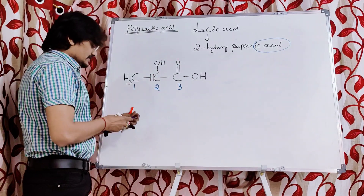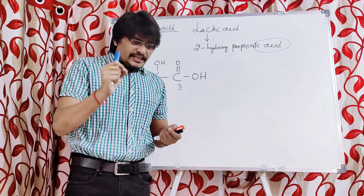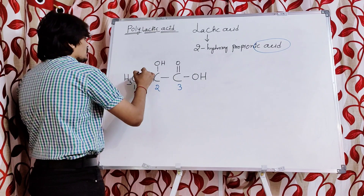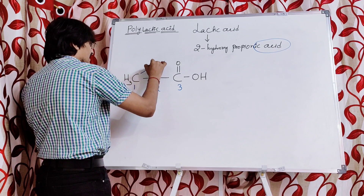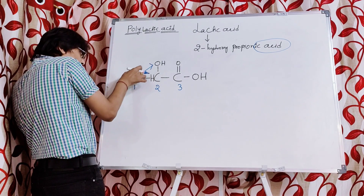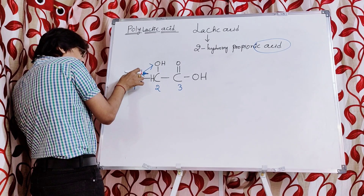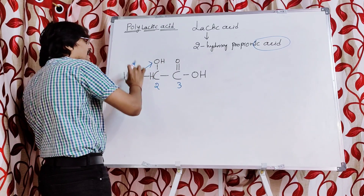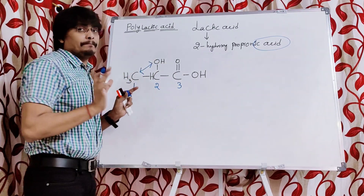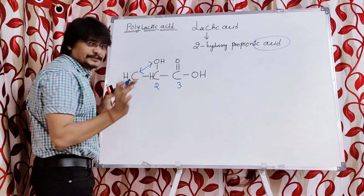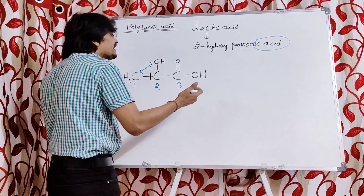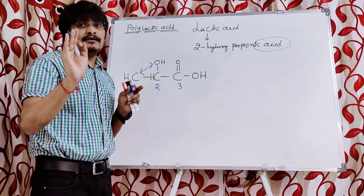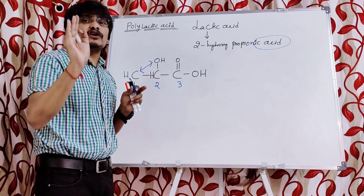Now, in order to simplify the preparation or synthesis of polylactic acid, I will rearrange the structure. I will bring the hydroxy group to where the methyl group is and take the methyl group to where the hydroxy group is — just interchanging the hydroxyl and methyl groups, which are both attached to the second carbon only. Since both are attached to the same carbon, we can interchange their position to simplify and easily remember the structure.